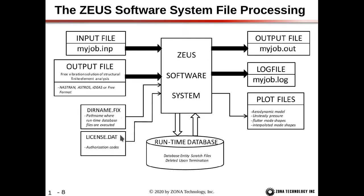When you run Zeus, it reads all of this information, creates the runtime database — a scratch directory where files are written and read during execution — and then creates the output file. The output file takes the same name as the input file but with the extension .out instead of .imp, and it's a simple text file viewable with any text editor. A log file is also created so you can see approximately how much time is taken in each module of Zeus; it uses the same base name with .log appended.